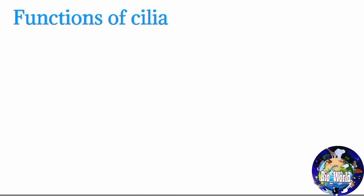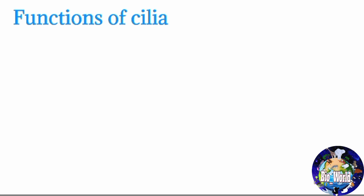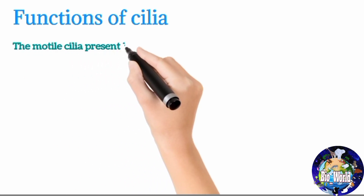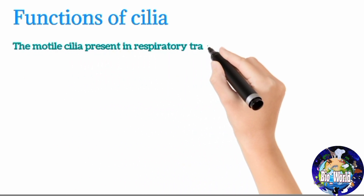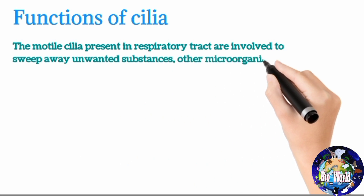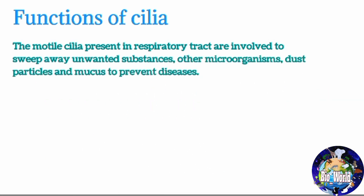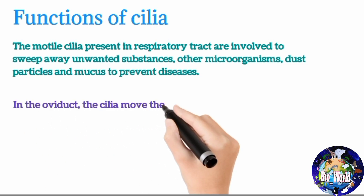The functions of cilia may differ in different types of animals as well as in different types of cilia. The motile cilia present in the respiratory tract are involved in sweeping away unwanted substances, microorganisms, dust particles, and mucus to prevent diseases. In the oviduct, the cilia move the ovum from the ovaries to the fallopian tubes for fertilization.